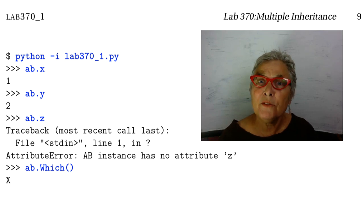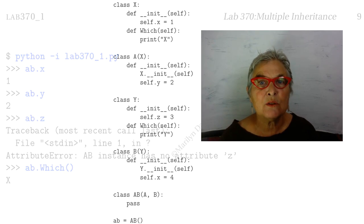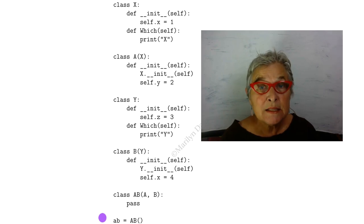And you probably got the which correct. But let's go and see why there is no c. Here, on this line, ab is equal to capital AB parens. We are instantiating an object of the ab class.